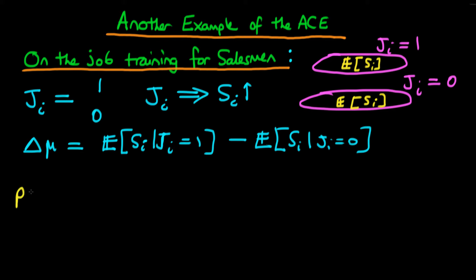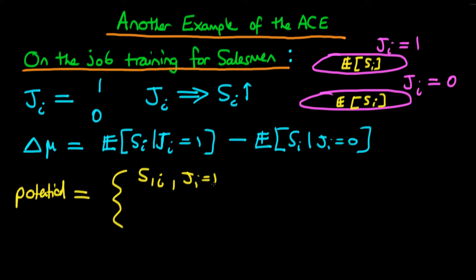Much like before, we can actually define the potential level of sales for each individual candidate, and there are going to be two different potential levels of sales. There's the level of sales which that individual would have achieved if they had received on-the-job training — that's s1i, when ji is equal to one. And there's also another potential level of sales, which is the level of sales that individual would have achieved if they hadn't received on-the-job training — that's s0i.